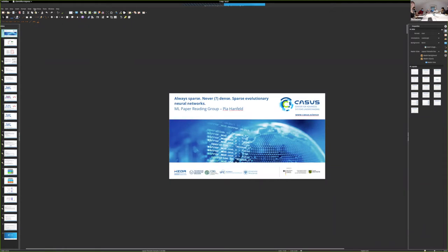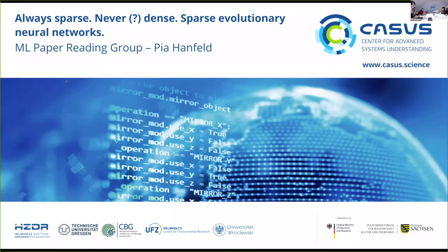So back in the Cretaceous period when all we had was statistics, there was a big focus on the principle of parsimony in statistical modeling — trying very hard to end up with statistical models that were only as complicated as needed to get the job done. And managing the variance-bias trade-off: more parameters reduces bias but increases variance.